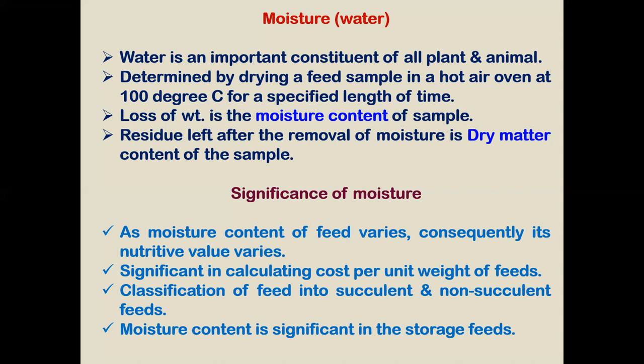In the laboratory, we can estimate moisture content by the use of a hot air oven at 100 degrees centigrade for a particular length of time as mentioned in our laboratory manuals. The loss of weight which occurs is the moisture content, and the material left is the dry matter content. By this way, we can calculate both moisture content and dry matter content.